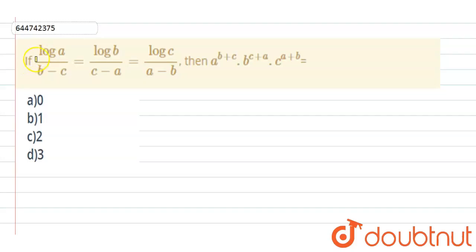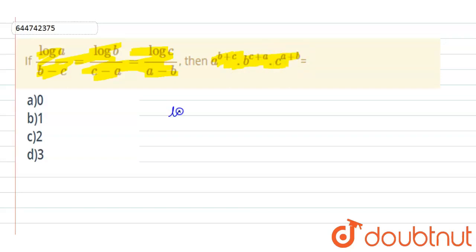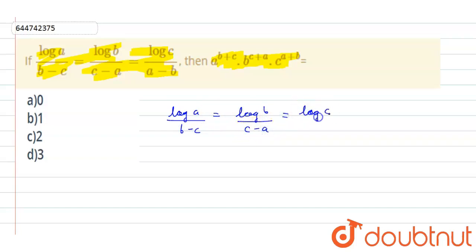The question is: if log(A/(B−C)) = log(B/(C−A)) = log(C/(A−B)), then A raised to the power (B+C) into B raised to the power (C+A) into C raised to the power (A+B) is equal to what? So it is given that log(A/(B−C)) = log(B/(C−A)) = log(C/(A−B)).